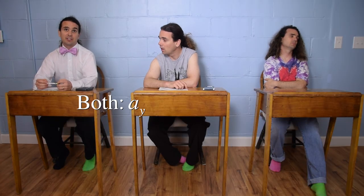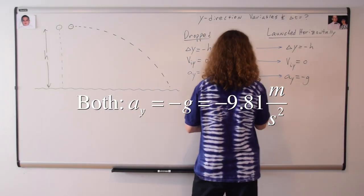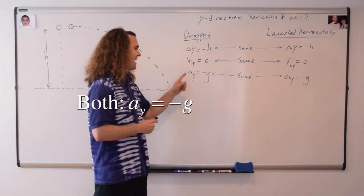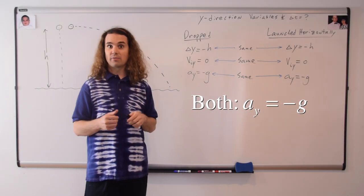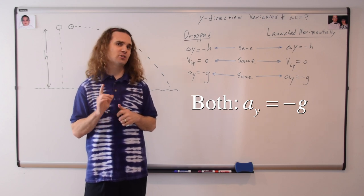Billy, what else do we know? Both are in free fall in the y direction, so their acceleration in the y direction is negative 9.81 meters per second squared. Actually, I'm going to leave it as negative little g, or the acceleration due to gravity, because I want to point out that this is true on any planet, not just planet Earth.